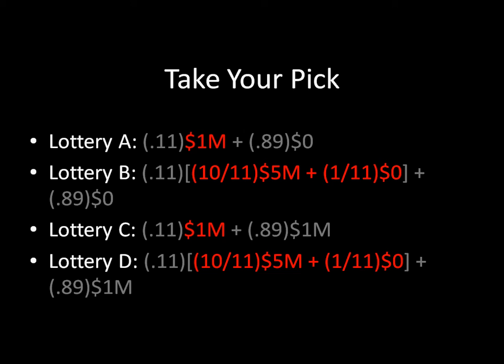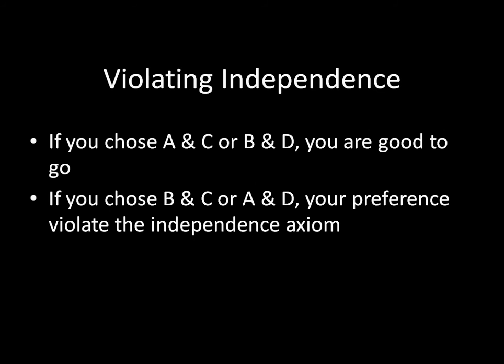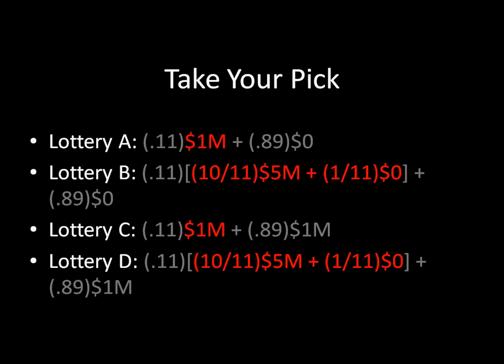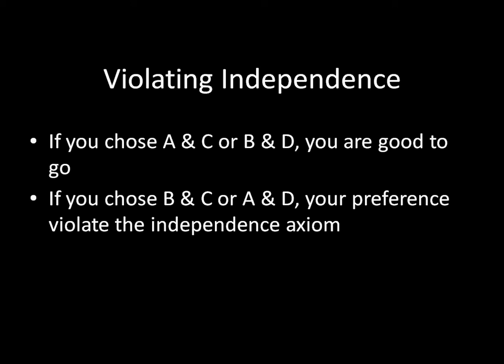This means we can use your answer to see whether your preferences violate independence in this particular example. If you chose lotteries A and C, or lotteries B and D, you're good to go — that shows consistency over that choice between $1 million and the $5 million/$0 lottery. However, if you chose B and C, or A and D, your preferences violate the independence axiom. But if you're in that second category, let me just assure you — you're not alone.